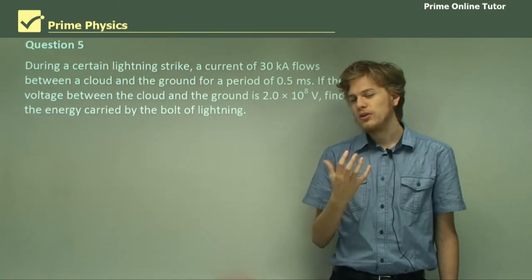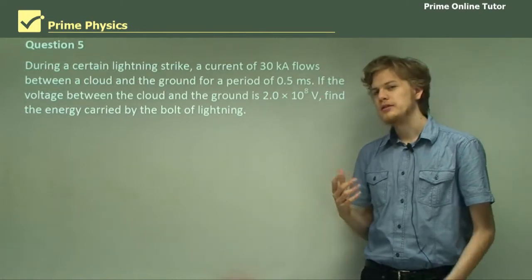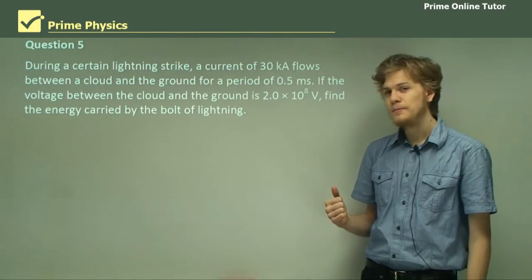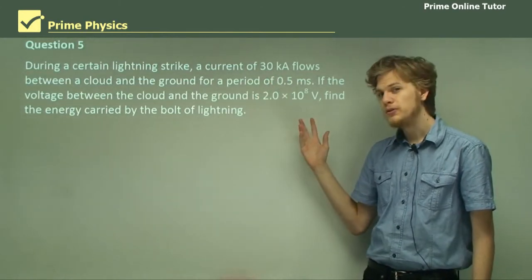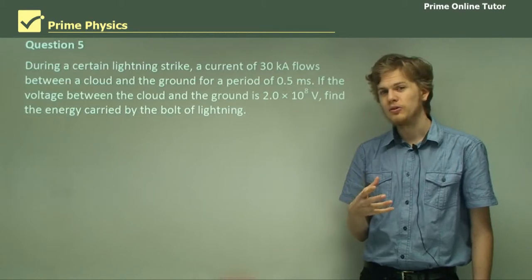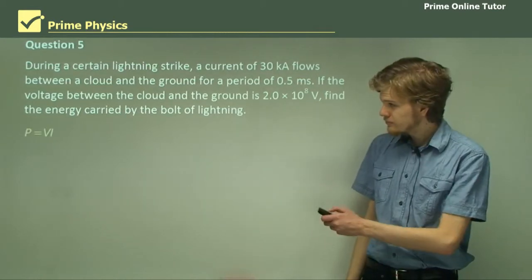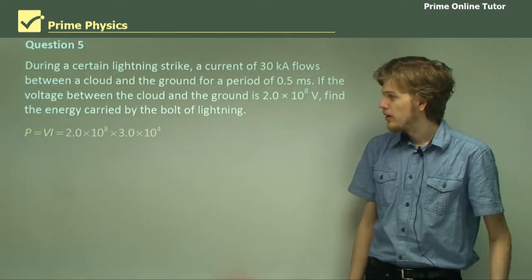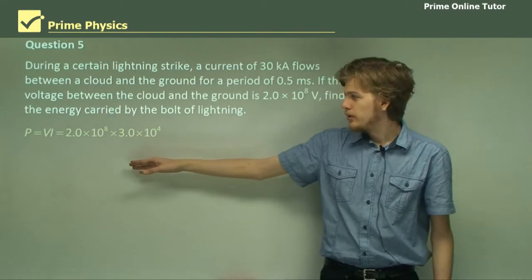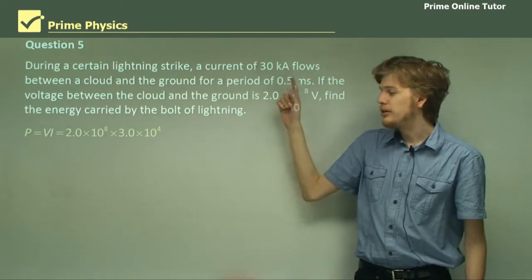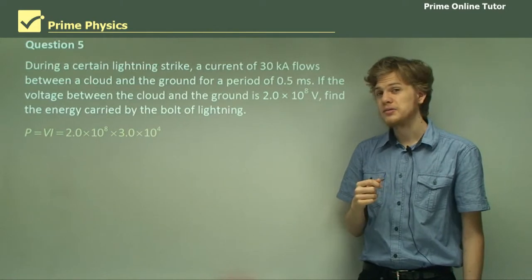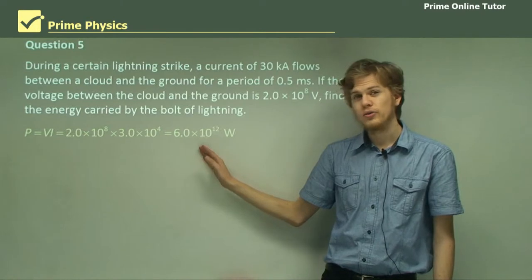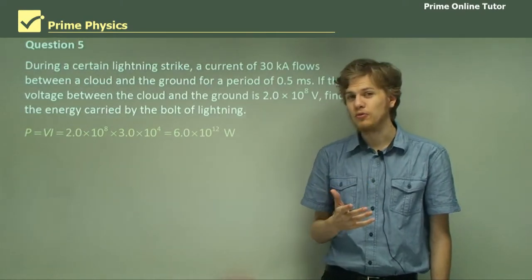So in order to figure this out, all we need to do is use one of our equations for power. We have a current, we have voltage, and that will let us find the power of the lightning strike. P equals VI. So, substituting, we have 200 million volts times 30 kilo amps. Remember, a kilo amp is a thousand amps. Which will give us 6 times 10 to the 12 watts, which is an absolutely incredible number of watts.